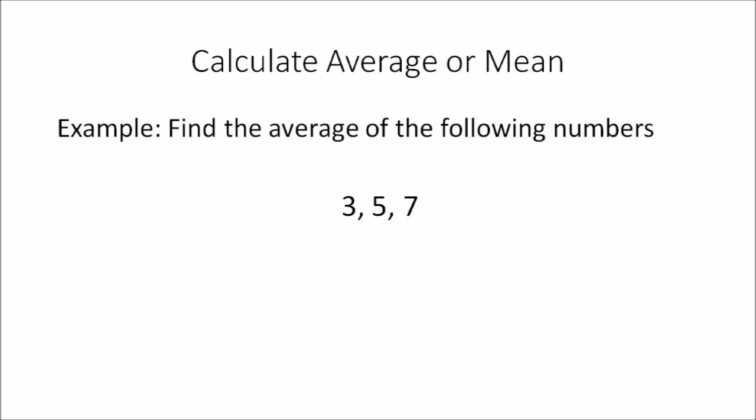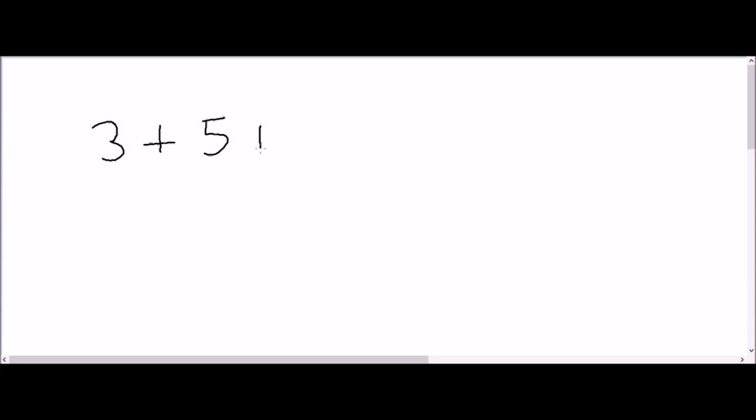We'll do some examples to understand better. Find the average of the following numbers: 3, 5, and 7. If we had to find the average or mean of these three numbers, as per the formula we add the numbers — so 3 plus 5 plus 7. If you add these three numbers, the total you get is 15.